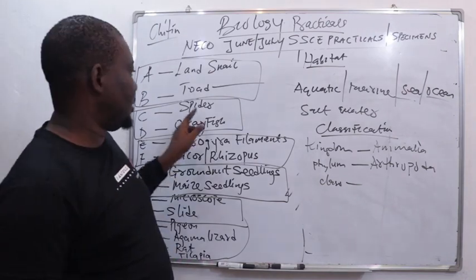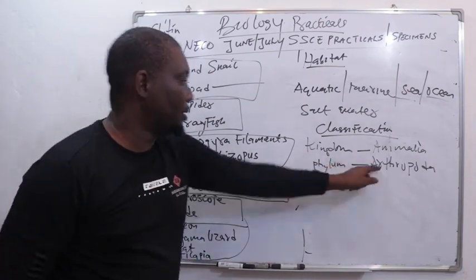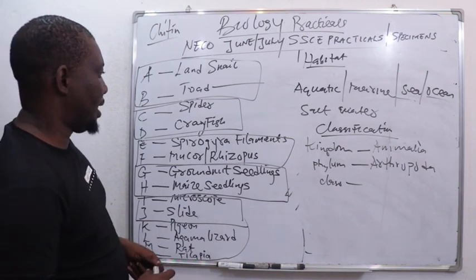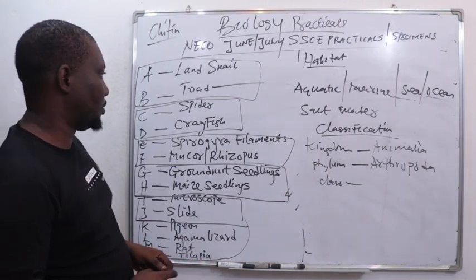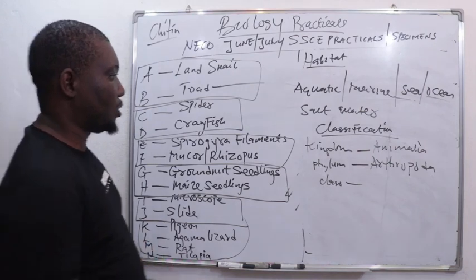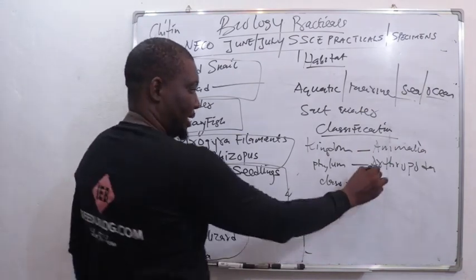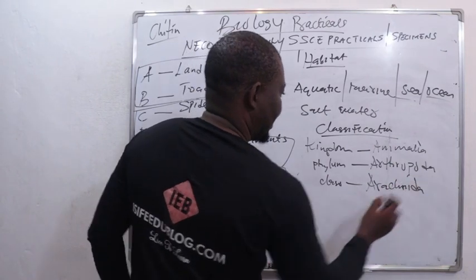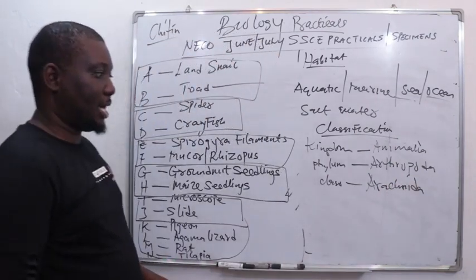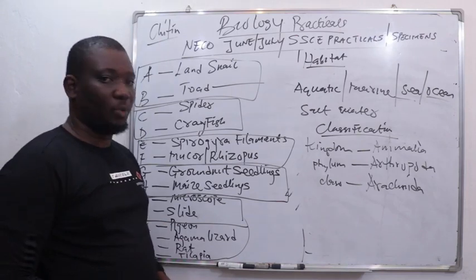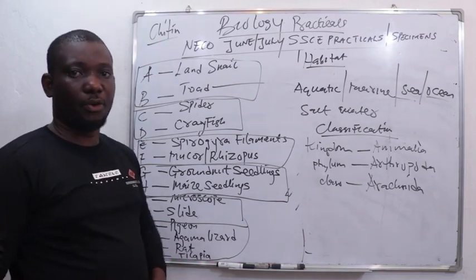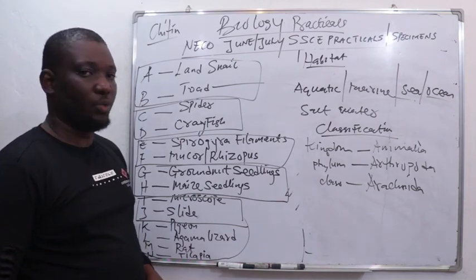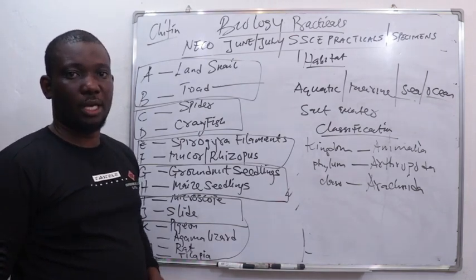That is why they are placed in this group. The next level is class. There are four classes under Arthropoda. Spider belongs to the class called Arachnida — a class of arthropod with eight legs, or four pairs of walking legs, and just two body divisions.